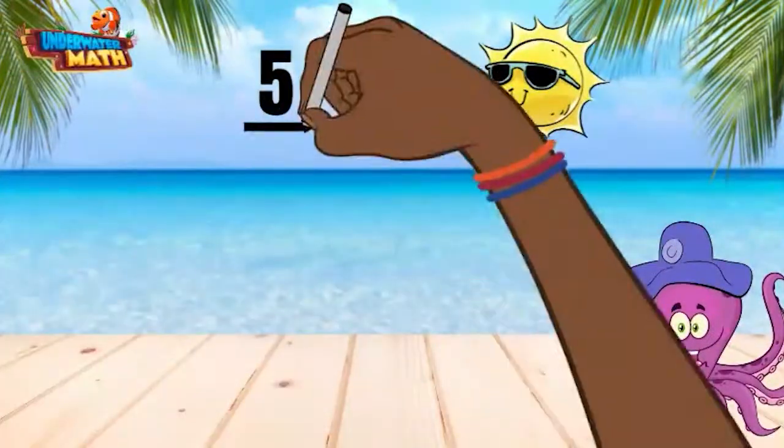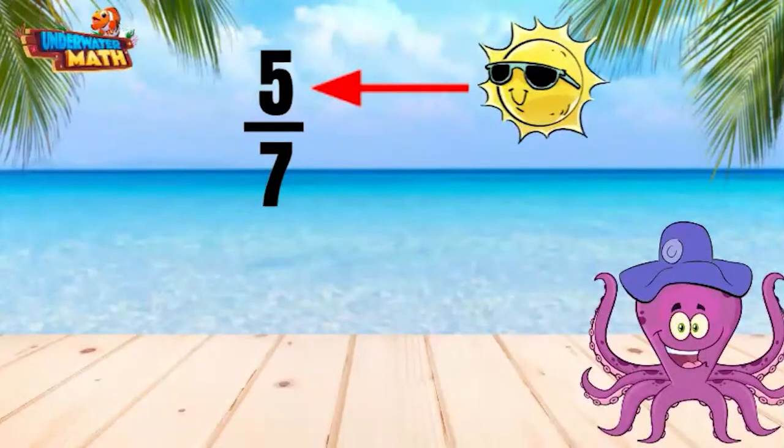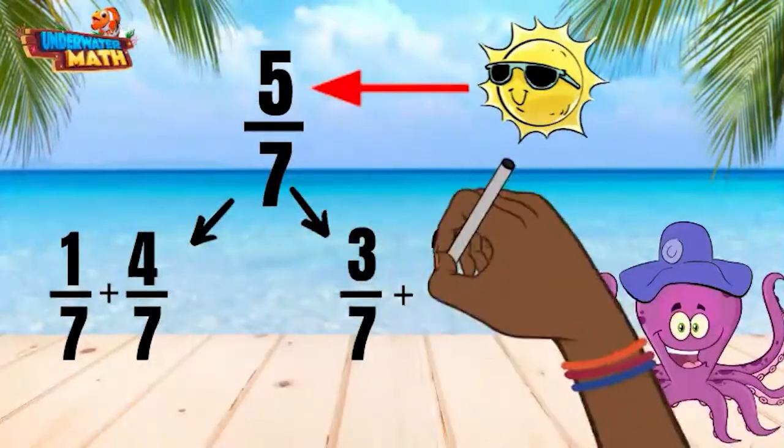Let's look at the fraction 5/7. When decomposing or breaking down a fraction, look at the numerator to tell you how many pieces of the whole you have. In this fraction, we have 5 and can break 5 down in a couple of ways. We can use the numerators 1 and 4 to make 5/7 or the numerators 3 and 2 to make 5/7.